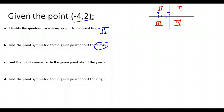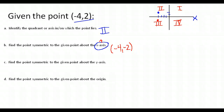Next, find the point symmetric to the given point about the x-axis. That means you want it to be across the x-axis — the horizontal axis — exactly the same distance away. Where this point is two above the x-axis, the symmetric point would be two below the x-axis, giving us the point negative four, negative two. When doing symmetry about the x-axis, you change the sign of the y-coordinate.